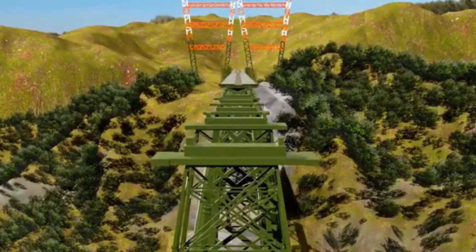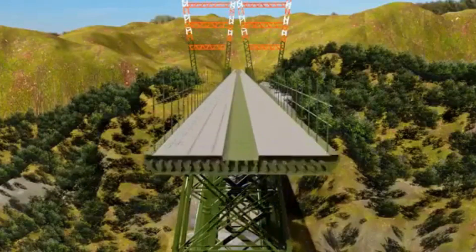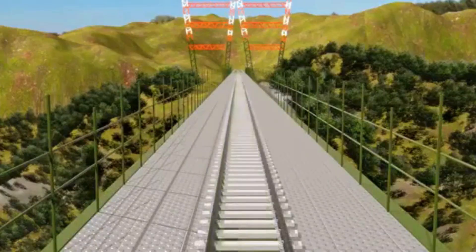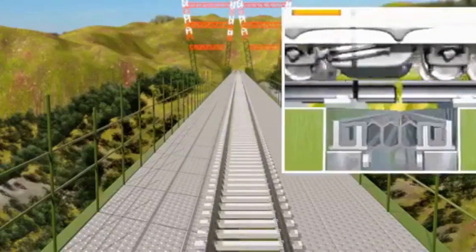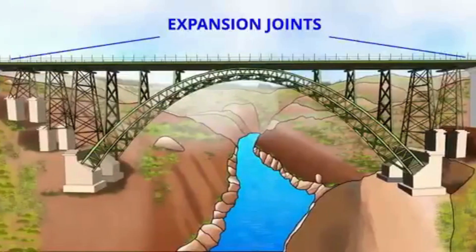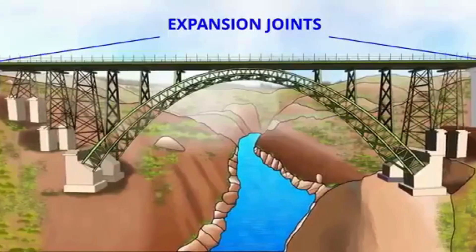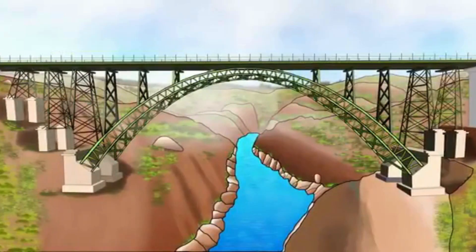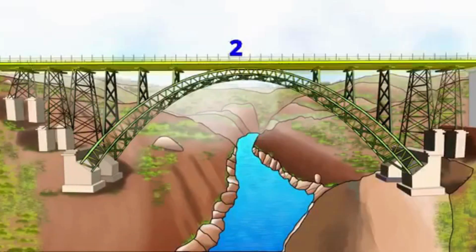The next stage of construction is the installation of decks. The rail track will be laid on this deck. We've already studied about the expansion joints of Chenab Bridge. The main span of Chenab Bridge uses two such expansion joints.